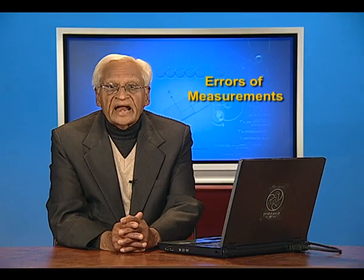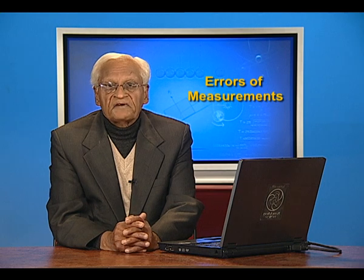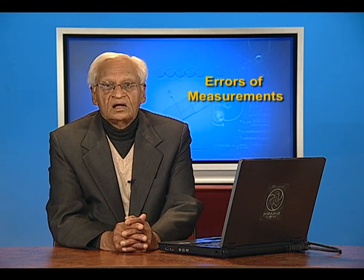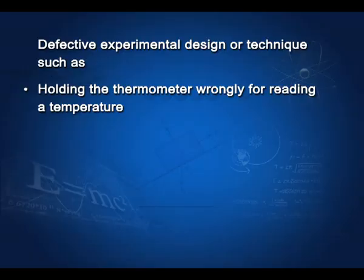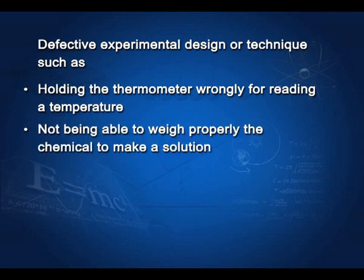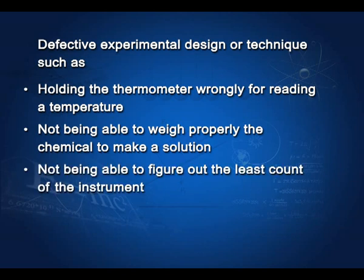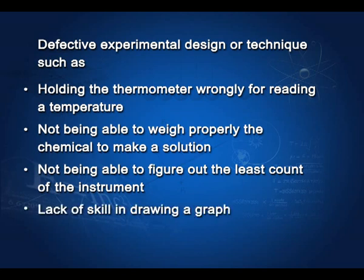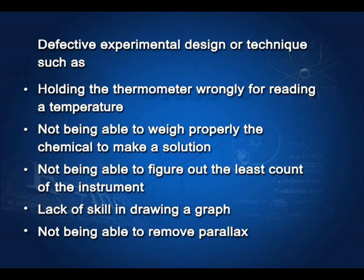A second category of systematic errors are defective experimental design or techniques, such as holding the thermometer wrongly for reading a temperature, not being able to weigh properly the chemical material to make a solution, not being able to figure out the least count of the instrument, lack of skill in drawing a graph, and not being able to remove parallax in optical experiments.